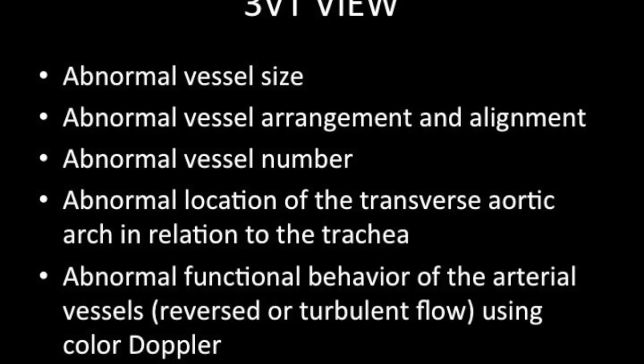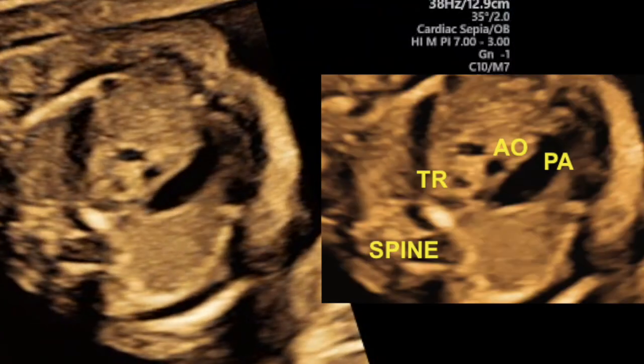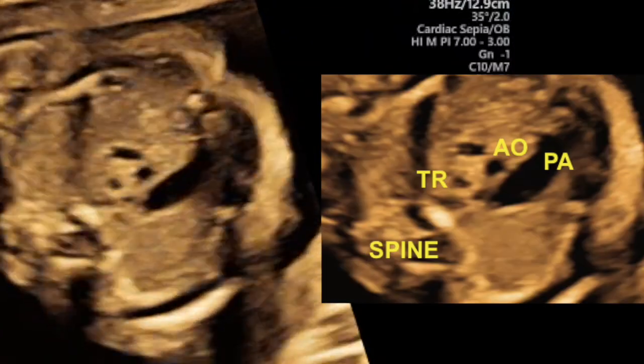The abnormalities which can be picked up on a three vessel trachea view include: abnormality in vessel size, abnormality in vessel arrangement and alignment, abnormal vessel number, abnormal location of the transverse aortic arch in relation to the trachea, and abnormal functional behavior of the arterial vessels such as reversed flow or turbulent flow — which will be seen only using color Doppler.